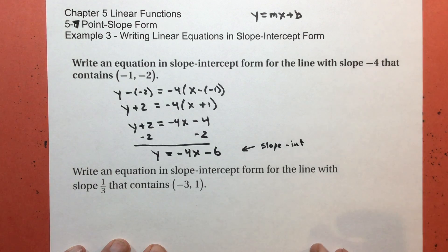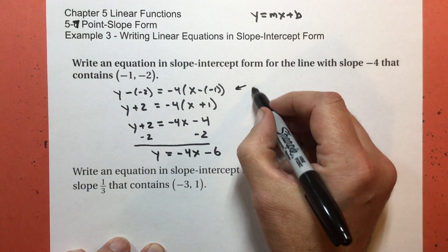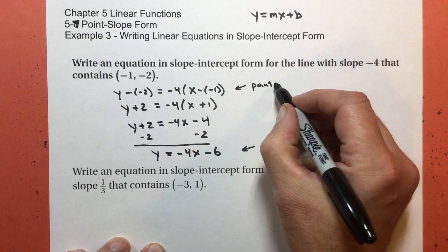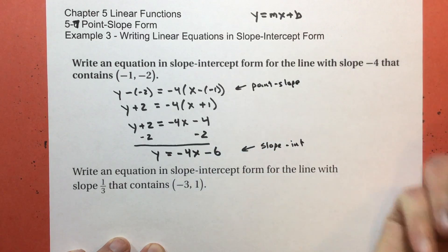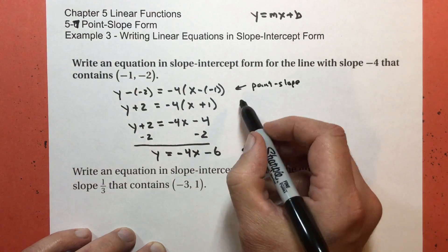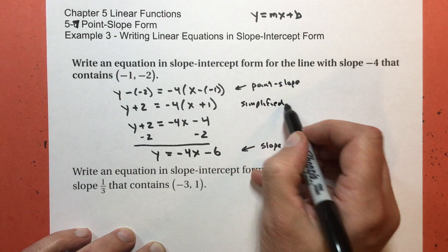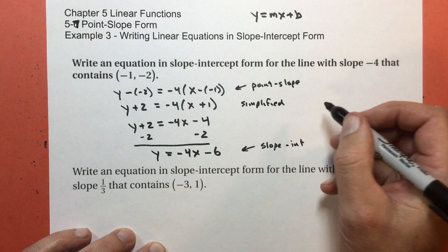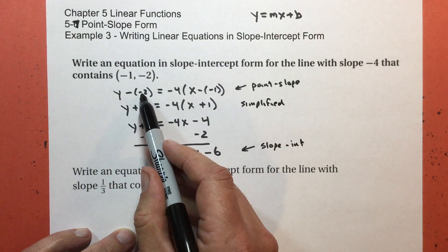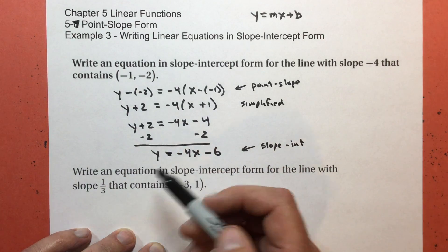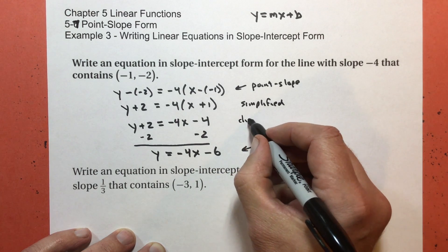So, I want you to look at this again. First, I started out with point slope form. I simplified inside the parentheses. Subtracting the negative 2 is the same as adding positive 2. This step, I did distribution.